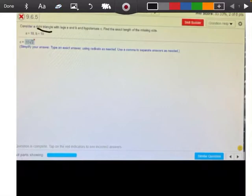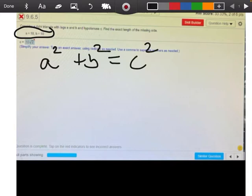Okay, so we have both legs here. Remember, the Pythagorean theorem is A squared plus B squared equals C squared.